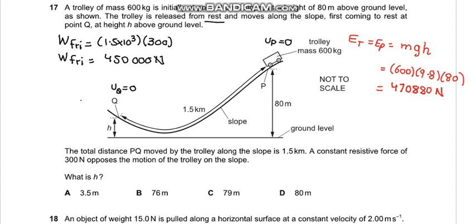Now while this trolley comes towards Q from this 470,880, the frictional work done would be deducted. So we can say that the energy at Q would be equal to energy at P minus the work done against friction.